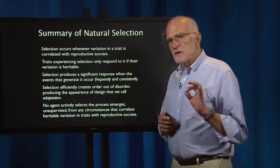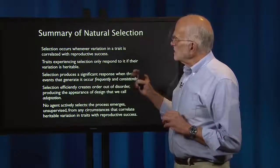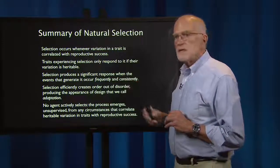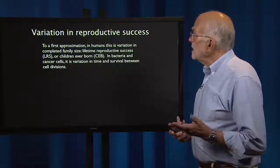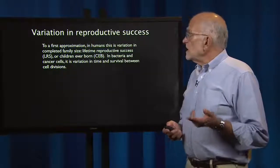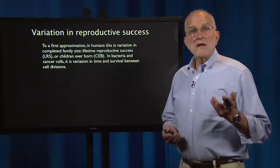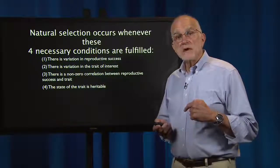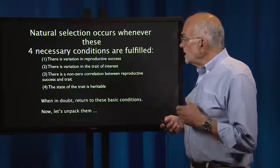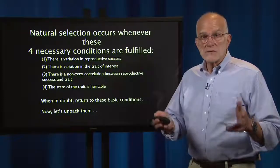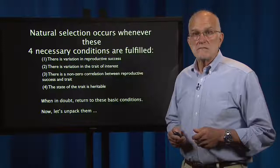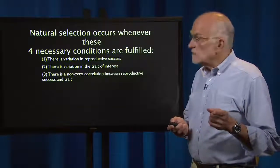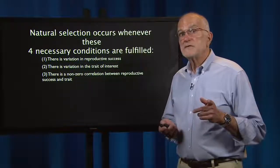Natural selection is largely a numbers game — it occurs in response to things that happen frequently and consistently. To recap the four conditions: first, variation in reproductive success (in humans, variation in completed family size, or lifetime reproductive success, LRS); second, variation in the trait of interest; third, a non-zero correlation between reproductive success and the trait; and fourth, the state of the trait is heritable — there is genetic variation for the trait. When in doubt, return to these basic conditions to understand whether natural selection could be operating on anything.